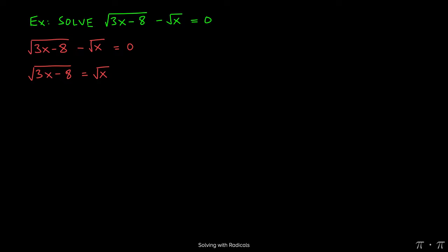Now that the radicals are isolated, we can square both sides to get rid of the square root. On the left-hand side, this leaves us with just 3x minus 8. On the right-hand side, we're left with simply x.